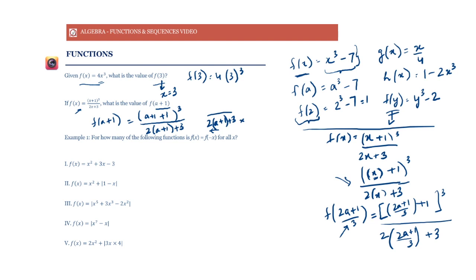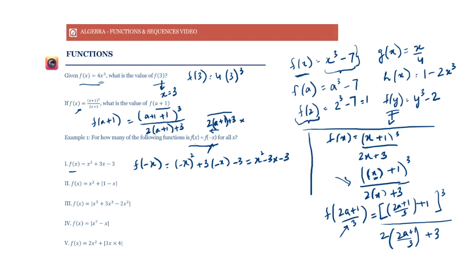Let's look at an example: for how many of the following functions is f(x) equal to f(−x) for all x? To find f(−x), wherever we have x, we put −x. So if f(x) = x² + 3x − 3, then f(−x) = (−x)² + 3(−x) − 3 = x² − 3x − 3. Are the two the same? No. So f(x) is not equal to f(−x) here.